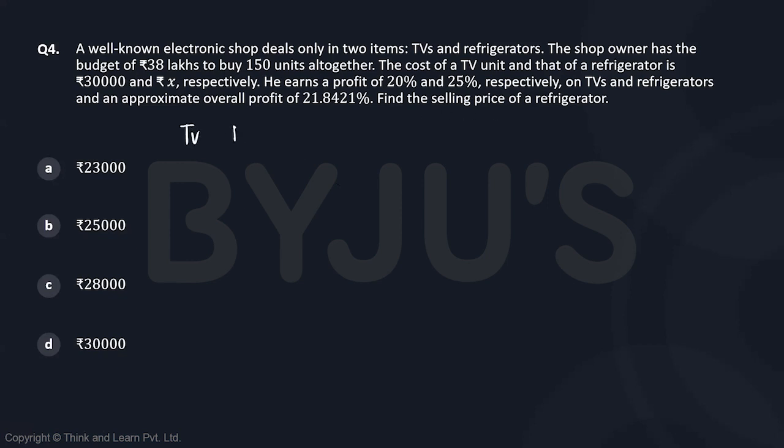If you look at TV and refrigerator, let's say the total number of TVs is A and total number of refrigerators is B. The first equation is A plus B equals 150 units. And 30,000 times A plus X times B - sorry, X into number of refrigerators - equals 38 lakhs. This is our second equation.